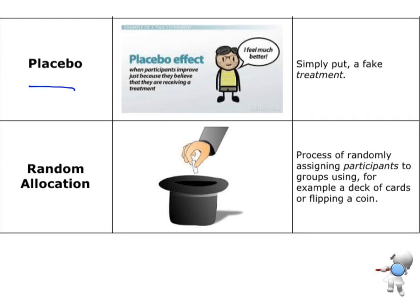Placebo — a placebo is what we call a fake treatment. There's been a lot of research showing that people who go to the doctor feeling unwell, about a third of them will feel better just because they've gone and talked to the doctor and feel like they're getting some kind of treatment. So if we give them a sugar pill, around 33% of people will feel better just from that interaction. The other two-thirds won't, but we have to take this into account.